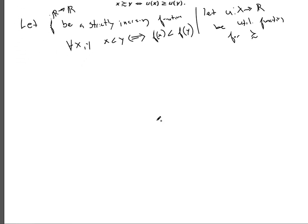Okay, so we want to show that v, our function v, which is a composite function, represents the same preference relation that u does. Here we're just going to set up a chain of if and only ifs and we'll see that the definition holds.